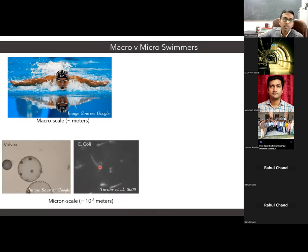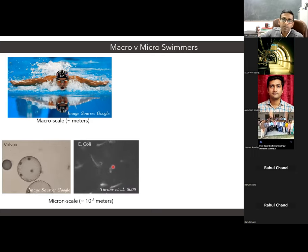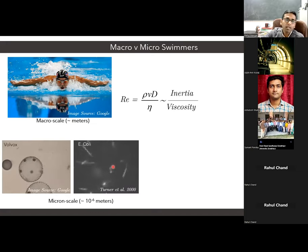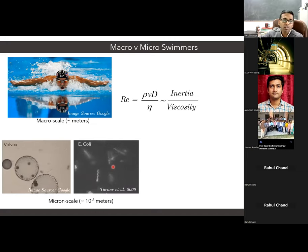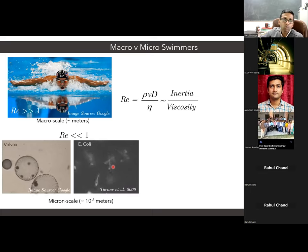The major difference between these two swimmers is their length scale. The former is of the order of a few meters, but these biological swimmers are of micron length scale. The difference in their length scale actually leads to a huge difference in the swimming strategies that nature has provided them. That difference can be characterized based on a very popular non-dimensionalized number known as Reynolds number, which allows us to compare the effect of inertia in the system with respect to the viscous drag.